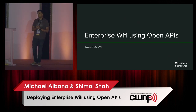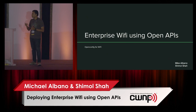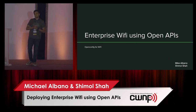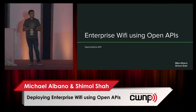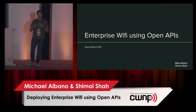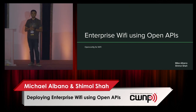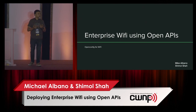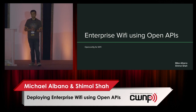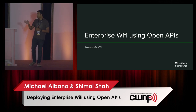Today we want to talk about how we run our enterprise Wi-Fi network using APIs, specifically open APIs - something we've been working on for the last 18 months. We'll cover where we are and end with a demo of how we run a multi-vendor network using one uniform API to build and operate the network.